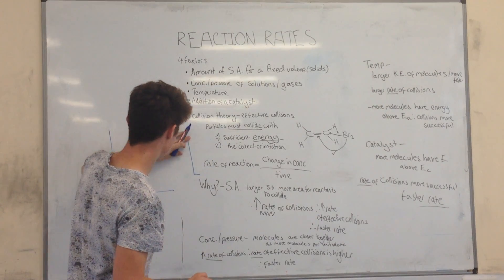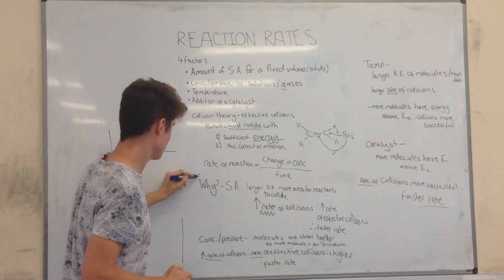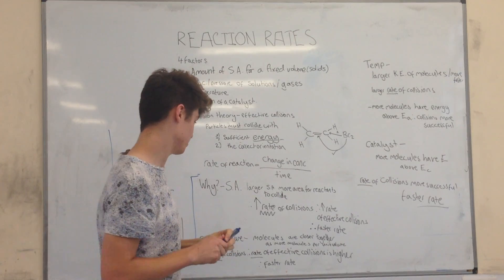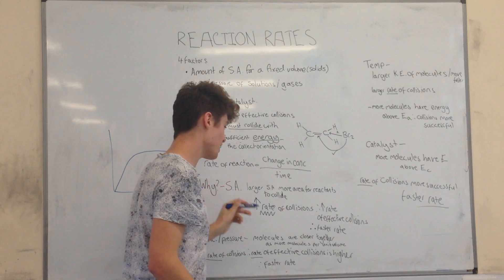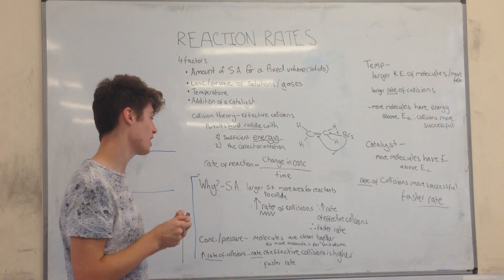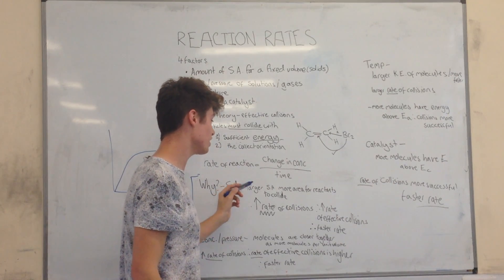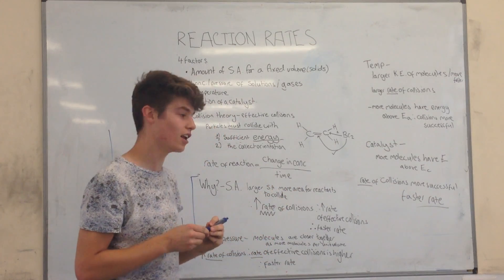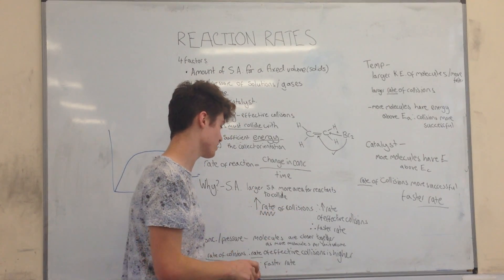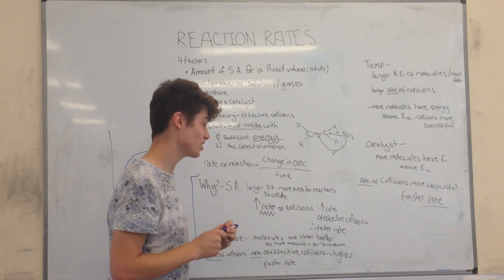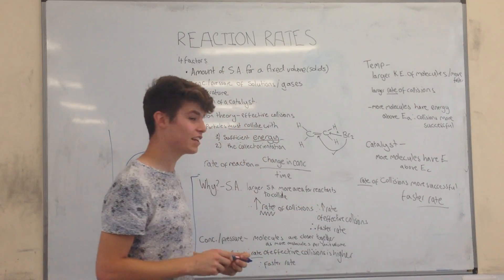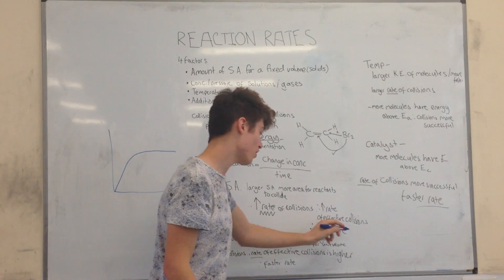Now I'm going to explain why these four factors affect the rate of reaction. Surface area — the larger the surface area, the faster the reaction. This is because there is a larger area for the reactants to collide on, which will increase the rate of collisions. And if there is an increase in rate of collisions, there's an increase in rate of effective collisions, and therefore a faster rate of reaction.